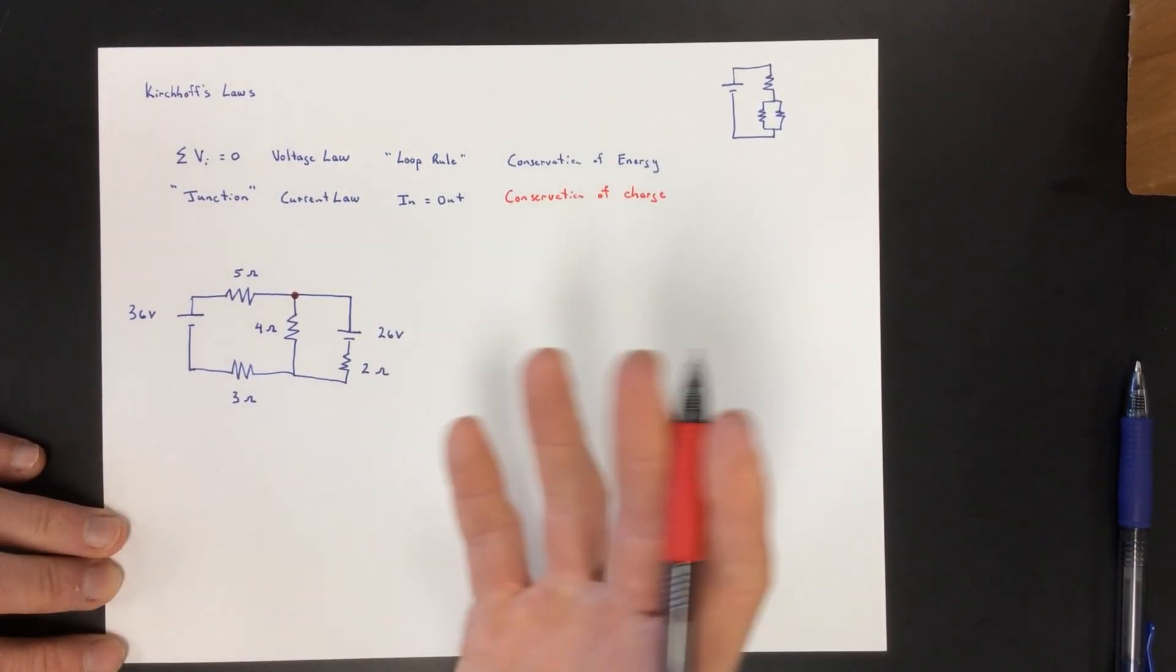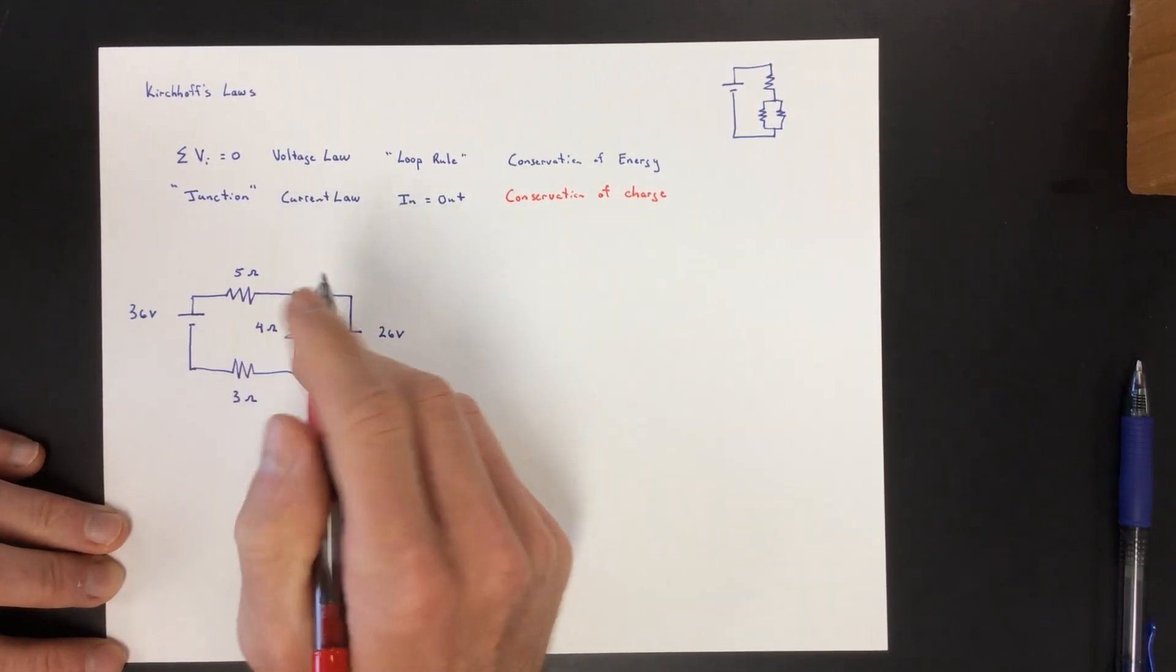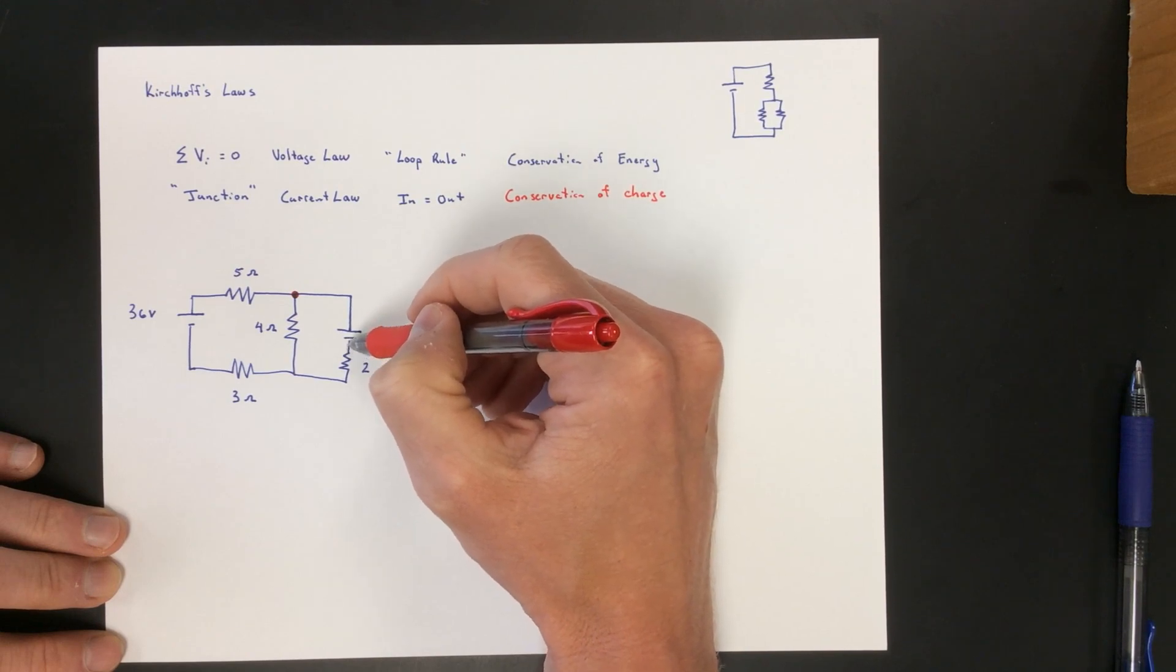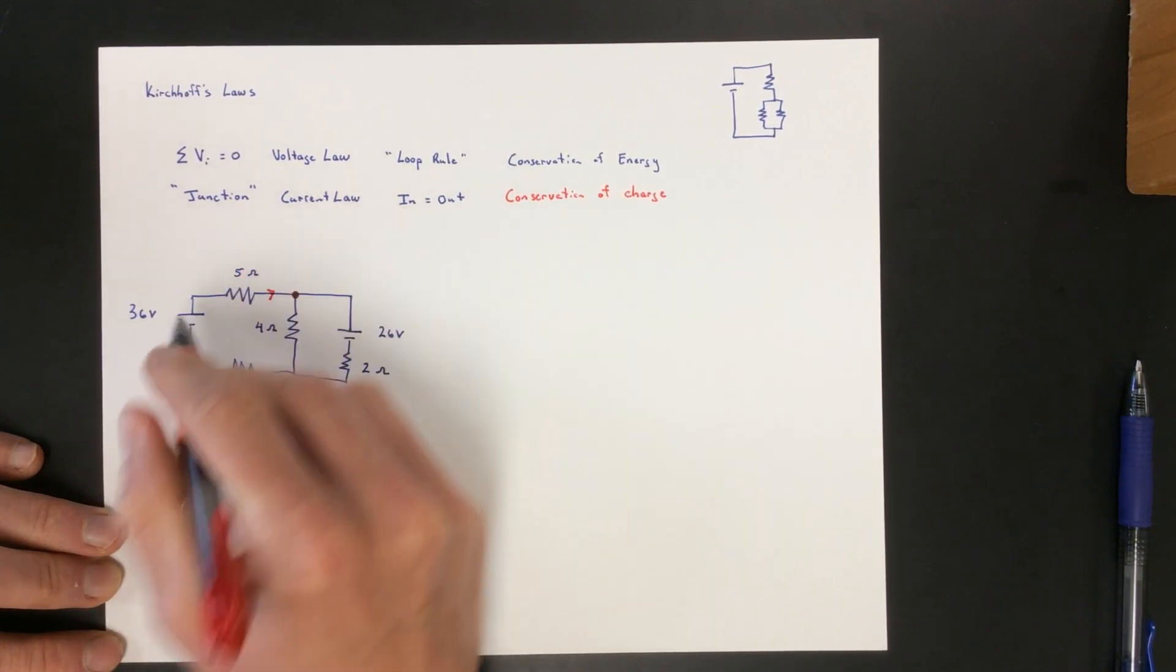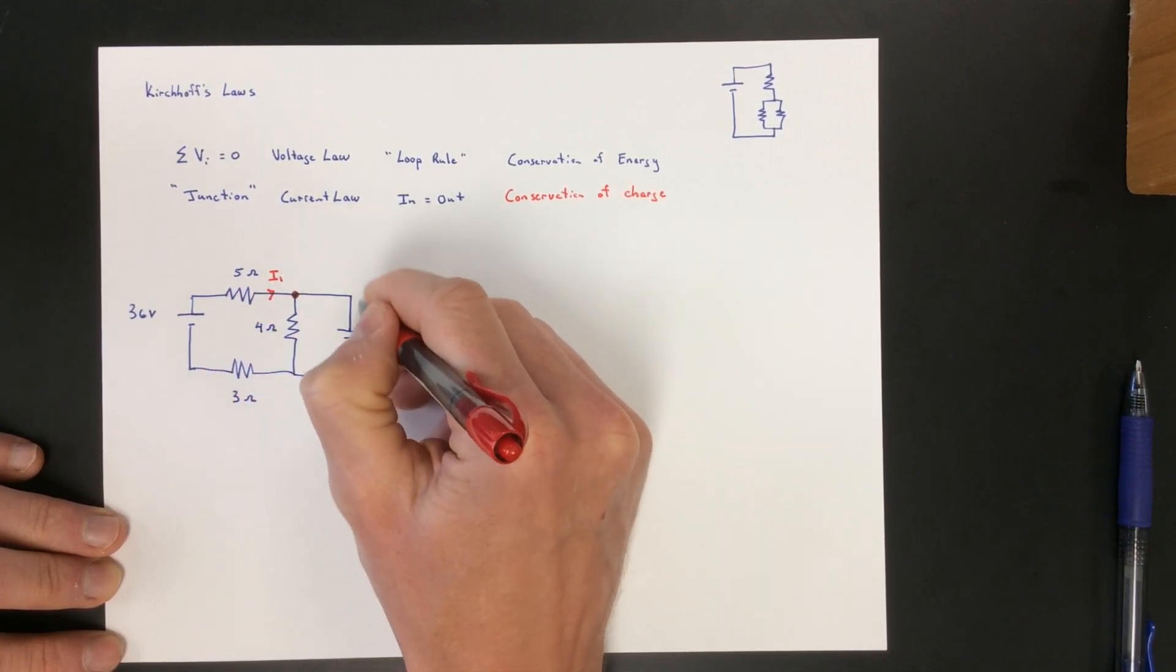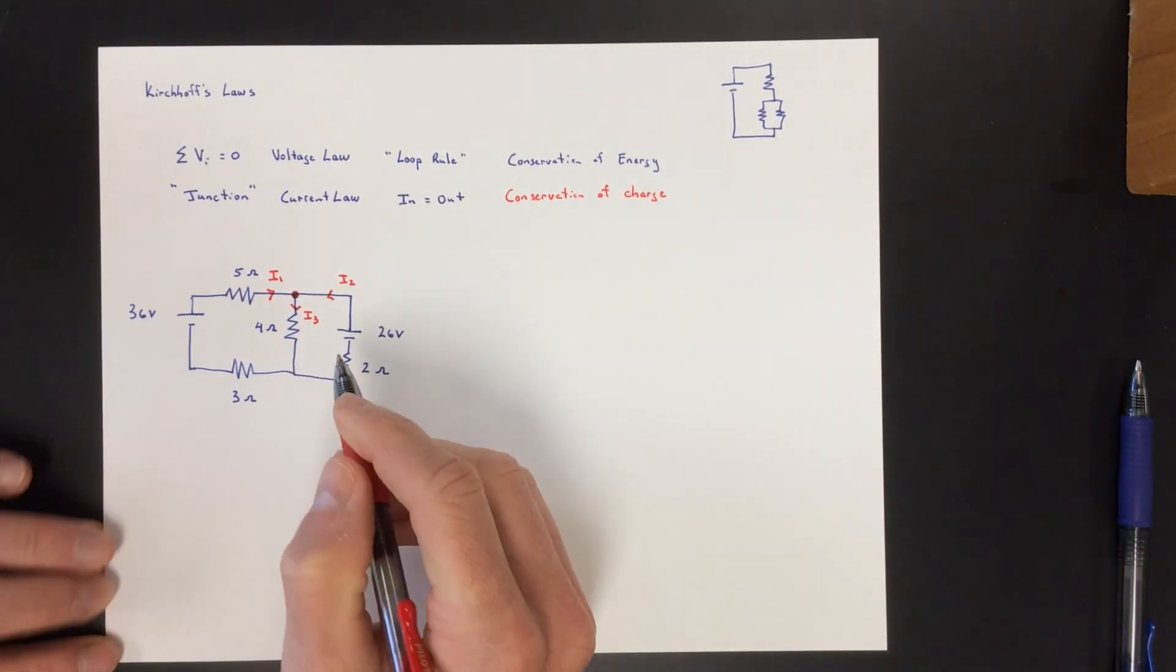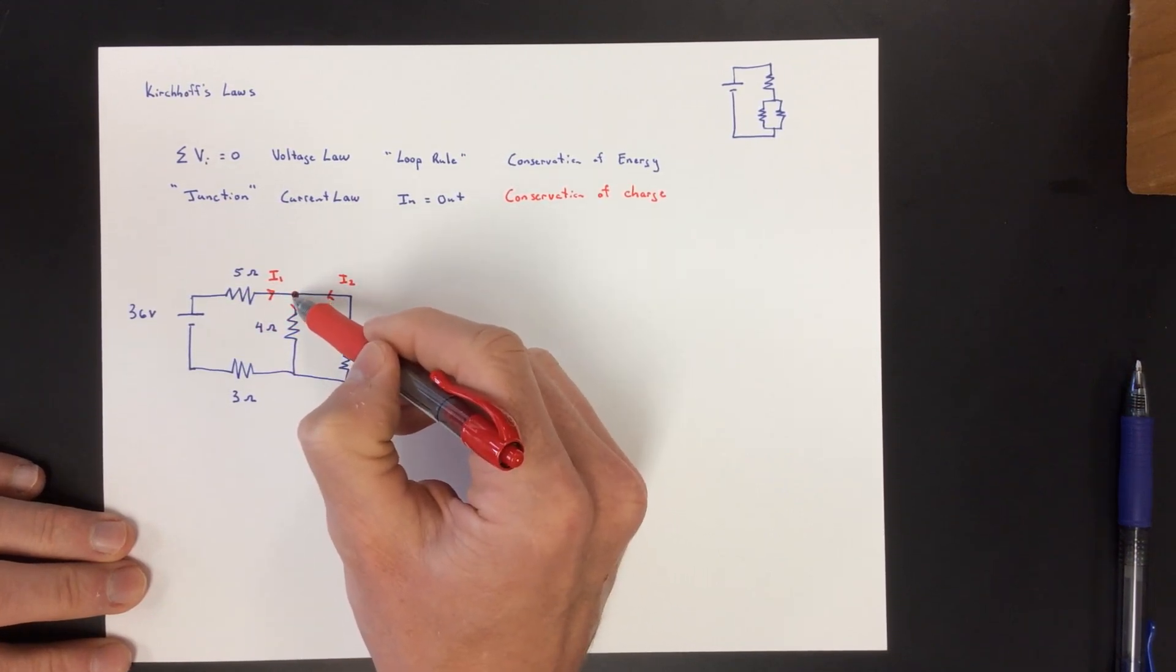So what we can do is we just name some currents. We can pick the directions wrong. You can get an idea of what was going to happen. If you think about what's happening here, you have a battery here and a battery here, and they're providing an electric field that's going to push things this way. This particular battery is going to force some current this way, and we'll call that current 1. Then this battery is going to try to push current this way, and we'll call that current 2. They're going to meet at this junction and then push some current down, and we'll call that 3.